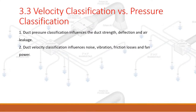Velocity classification versus pressure classification. Duct pressure classification influences duct strength, deflection, and air leakage. Duct velocity classification influences noise, vibration, friction losses, and fan power.